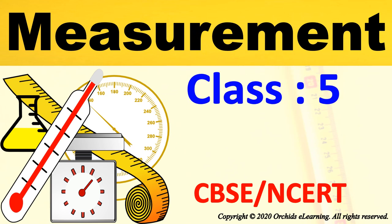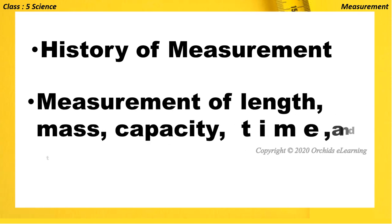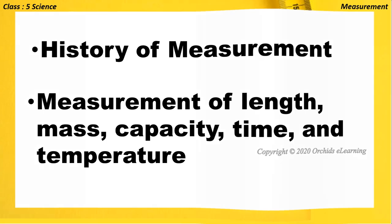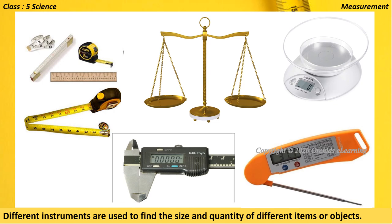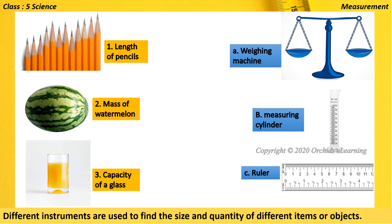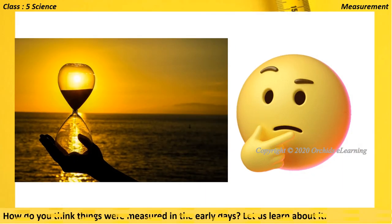Welcome to measurement, Class 5 Science. In this session you will learn about the history of measurement, measurement of length, mass, capacity, time, and temperature. Different instruments are used to find the size and quantity of different items or objects. Look at the pictures given and match them correctly with the instruments used to measure them. The length of pencils is measured with a ruler, the mass of a watermelon is measured with a weighing machine, and the capacity of a glass is measured using a measuring cylinder.